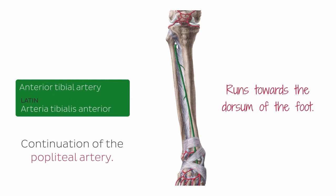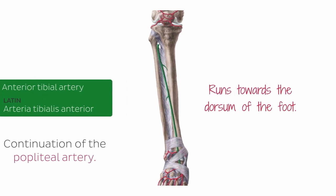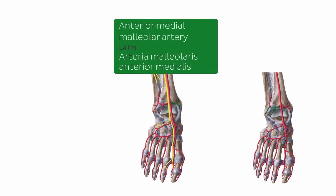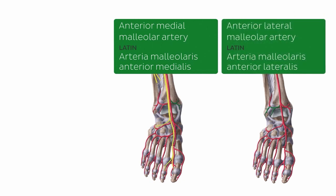Distally, the anterior tibial artery gives off two branches, which are highlighted in green. On the left image, we're looking at the anterior medial malleolar artery, and on the image on the right side, we're looking at the anterior lateral malleolar artery — some tongue twisters there.